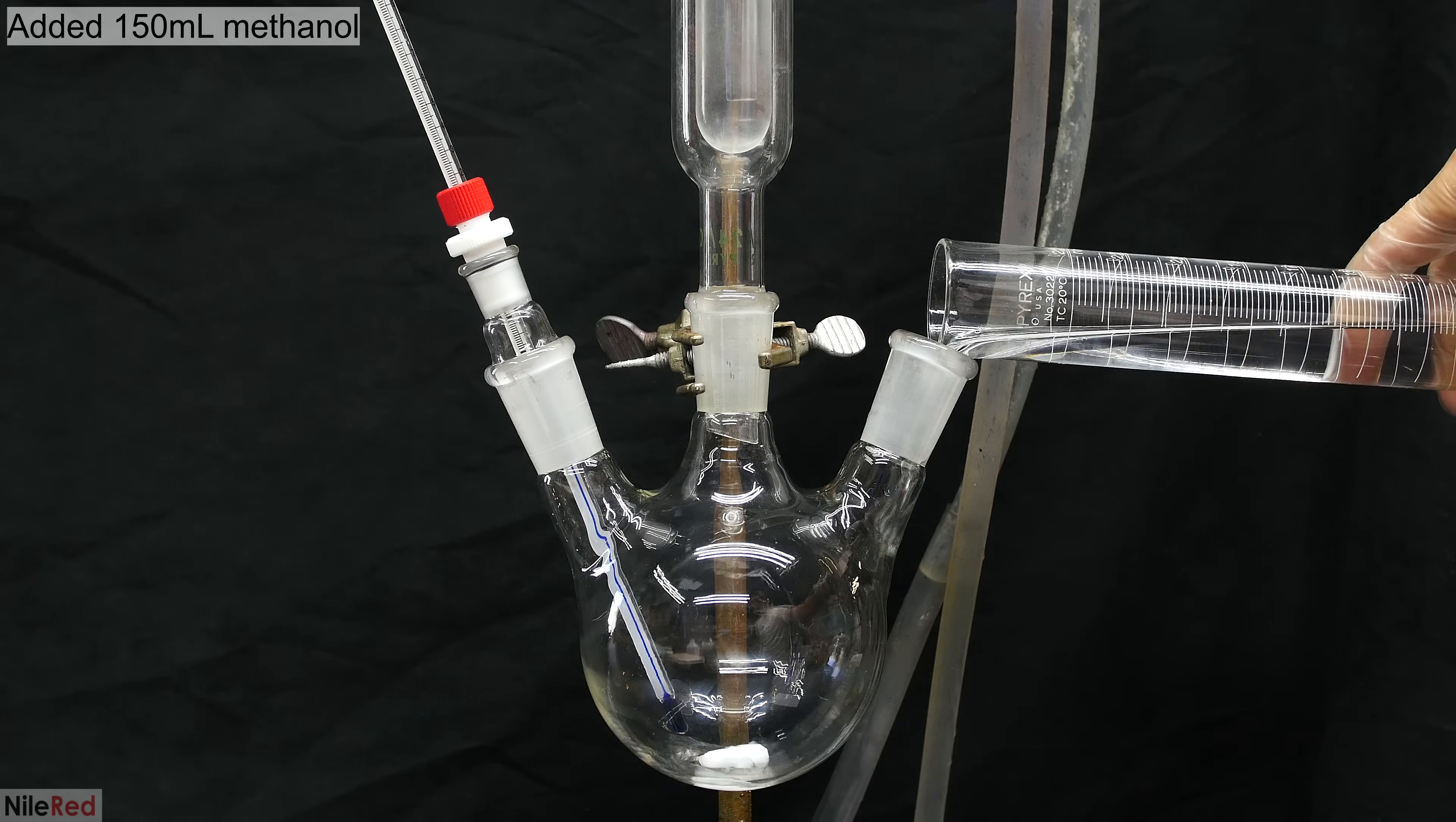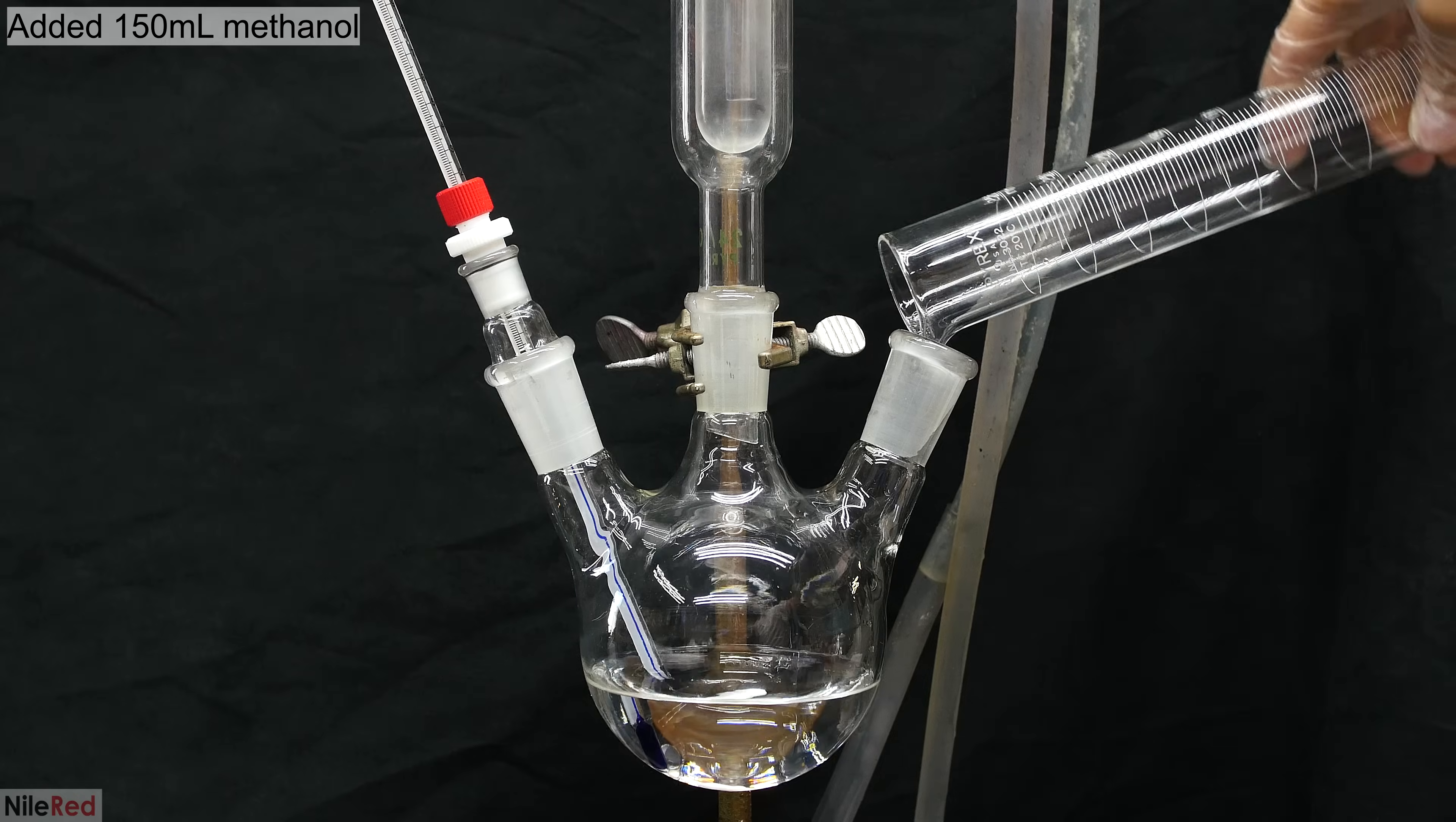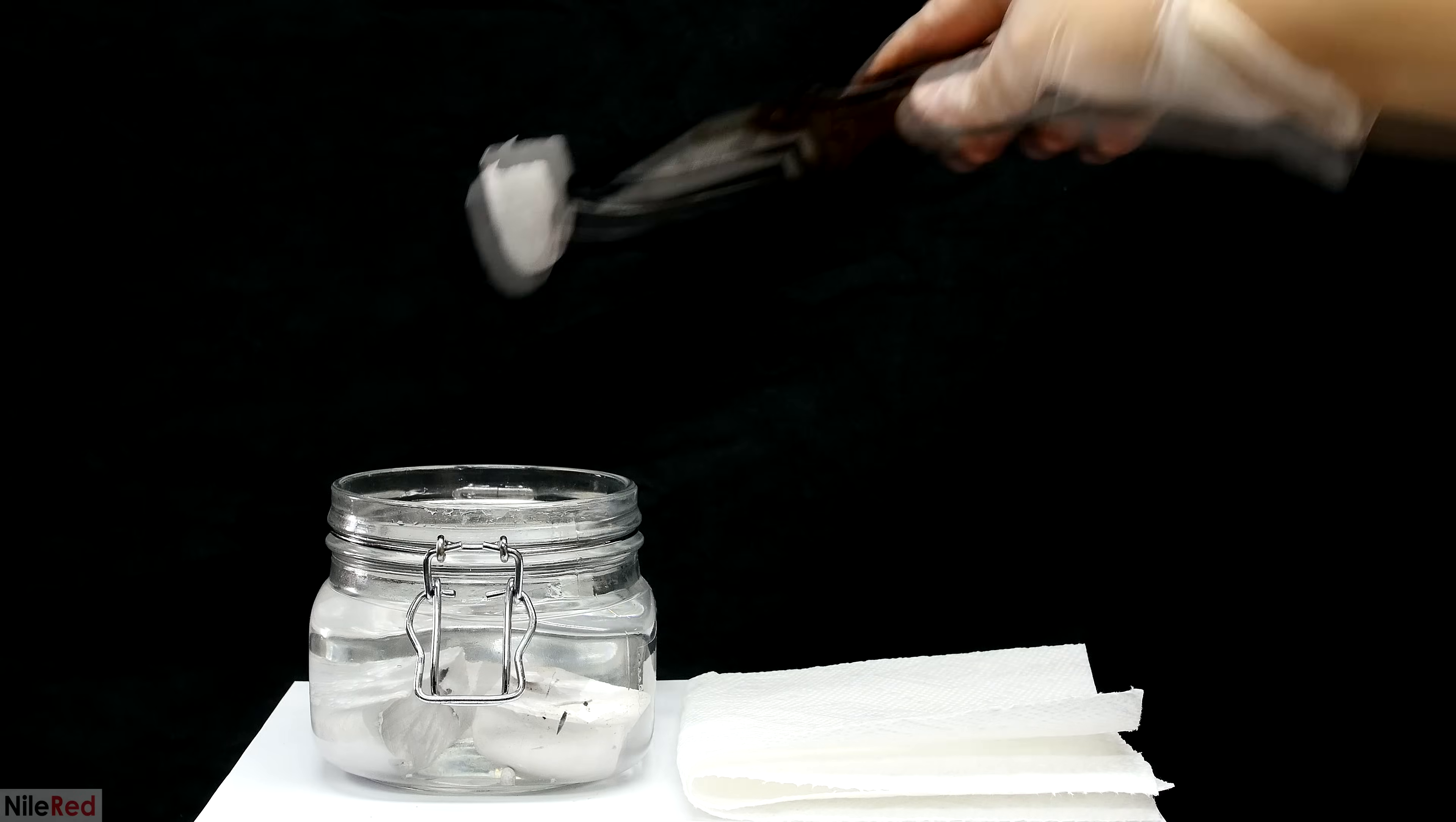To start things off, I added 150 milliliters of dry methanol to a round bottom flask. Once I'm done adding the methanol, I then move on to preparing the sodium metal. Before the sodium metal can be used, we first have to clean off the mineral oil that it was stored in, and then we have to chop it up into smaller pieces.